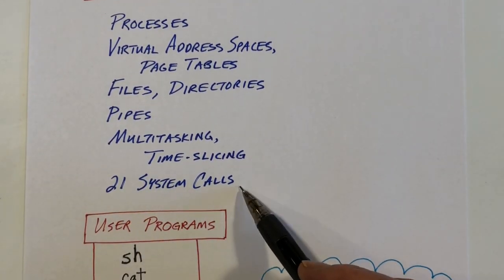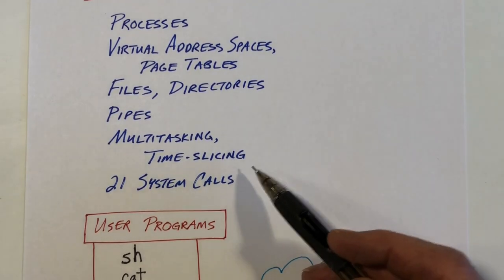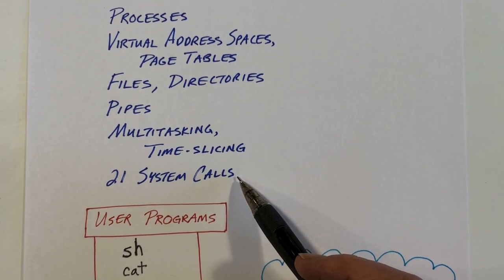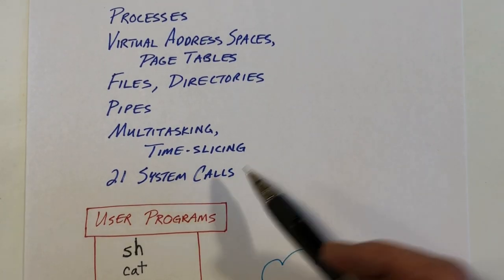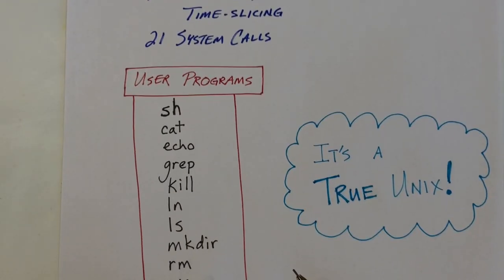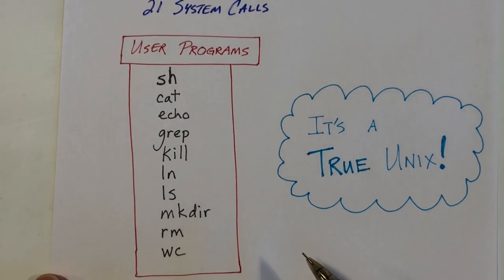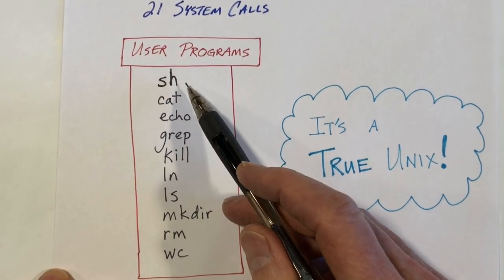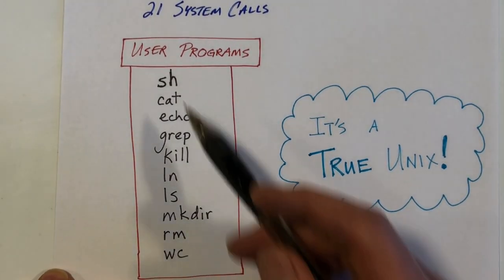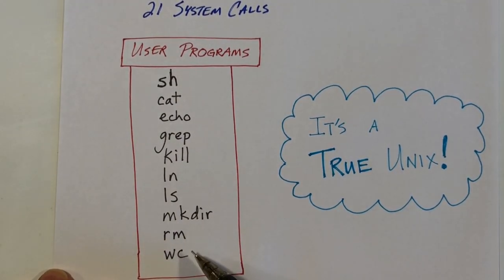There are 21 system calls that are implemented in XV6. This is not a lot. The production Unix systems have more like 300 system calls, maybe 500 system calls. But this is enough to give you the core ideas of Unix. There are a number of user programs that are supplied with this kernel, and these can illustrate the capabilities of this operating system.